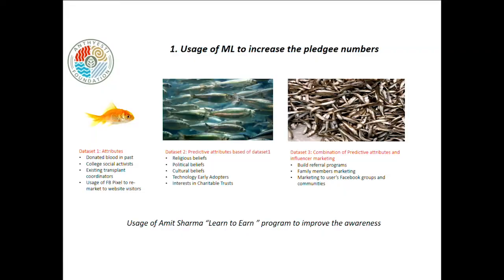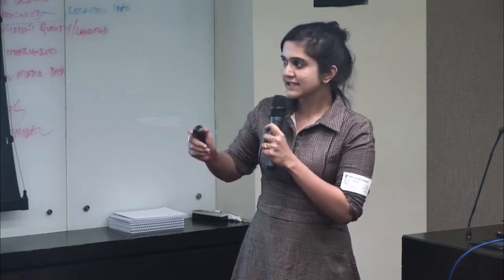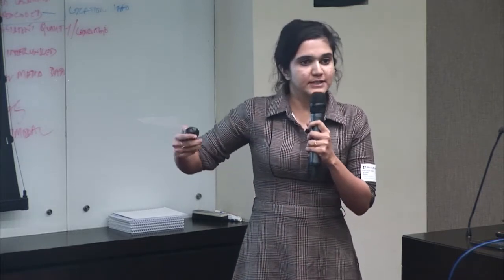Coming to the first point: usage of machine learning to increase the pledgy numbers. The dataset that we have has certain attributes — people who have donated blood in the past, social activists, or existing transplant coordinators. We can also use Facebook Pixel to remarket to people who are website visitors. These are the initial set of people who have already shown some inclination towards organ donation.